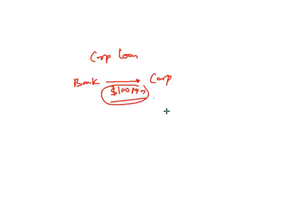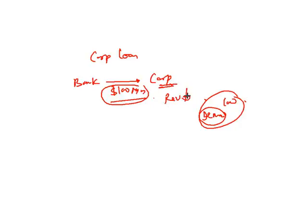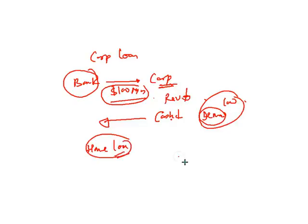However, if the economy is not doing well, demand for the corporate's products falls, leading to lower revenue and less cash to pay interest to the bank. Similarly, in home loans, a decrease in economic activity can reduce property prices, causing borrowers to default, resulting in losses for the bank.